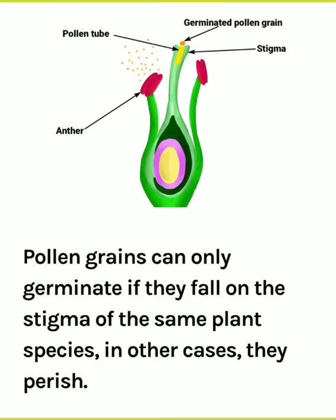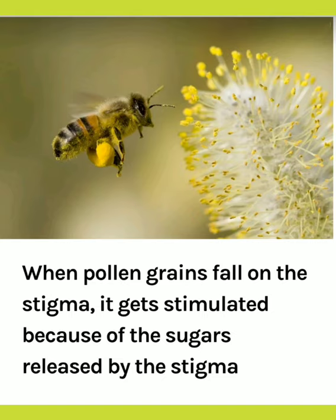Pollen grain germinates only if it has fallen on the stigma of the same plant species; otherwise it gets decomposed. The stigma of the flower provides a solution of sugars to feed the pollen cell.